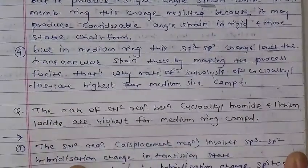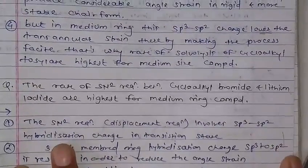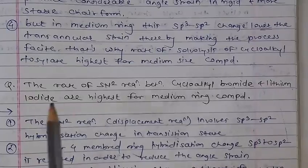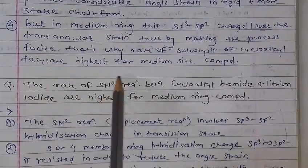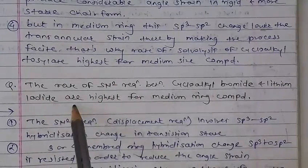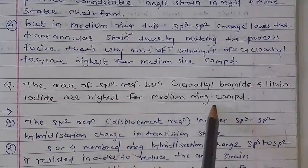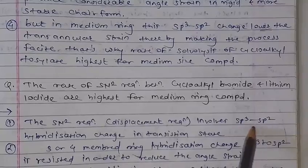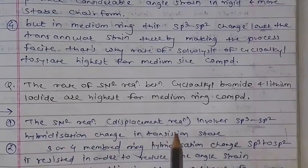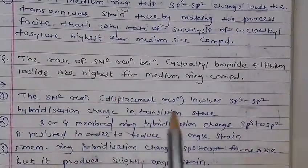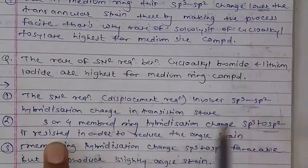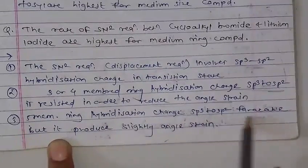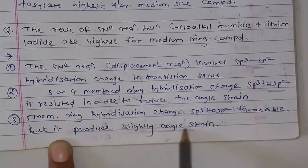The next point is the rate of SN2 reaction between cycloalkyl bromide and lithium iodide, which is the highest for the medium ring compound. The 4-membered ring has lower transient strain. The 5-membered ring produces slightly increased angle strain in the transition state.